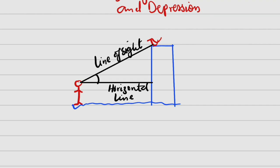So that angle formed between the horizontal line and the line of sight is either an angle of elevation or depression. What differentiates the two? If the line of sight is above the horizontal line, then the angle formed is an angle of elevation. So this right here is an angle of elevation.